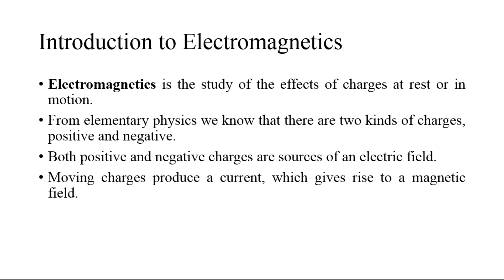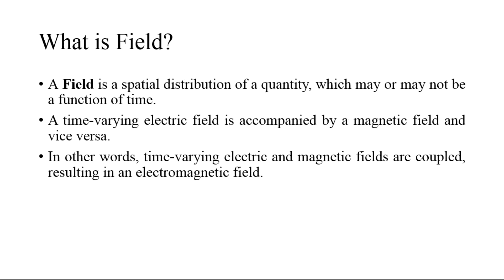When we have an electric field and a magnetic field, how do these fields interact with each other? A field is a spatial distribution of a quantity, which may or may not be a function of time. A time-varying electric field is accompanied by a magnetic field, and vice versa. In other words, time-varying electric and magnetic fields are coupled, resulting in an electromagnetic field.